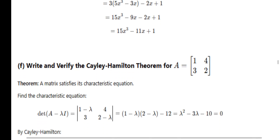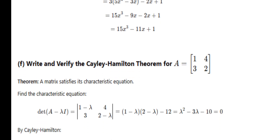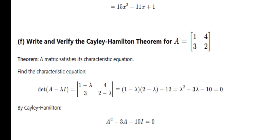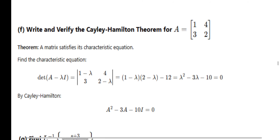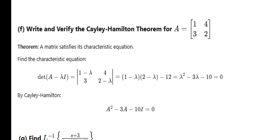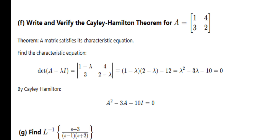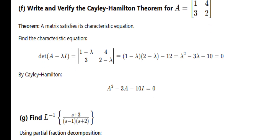Write and verify the Cayley-Hamilton theorem. For 2 marks this is difficult to prove fully — just write the statement and substitute the characteristic equation, then substitute the eigenvalue λ. That is enough.